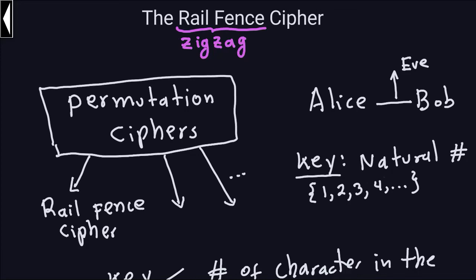Hello and welcome again. In the previous video we talked about the permutation ciphers. This is a very general way of arranging the letters — basically what we're going to do is rearrange the letters in the plaintext to produce a ciphertext. Now we need a systematic way to do that, something that we can actually do very easily without having to go into the much details of what a permutation is mathematically speaking.